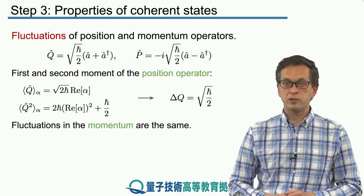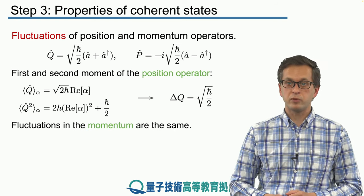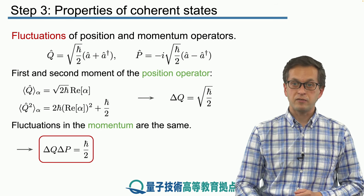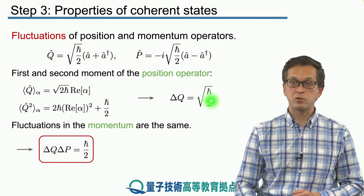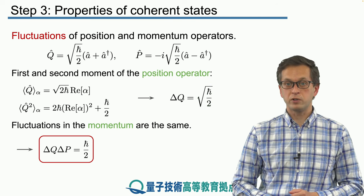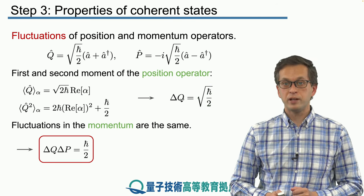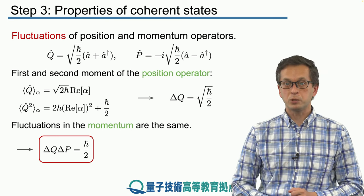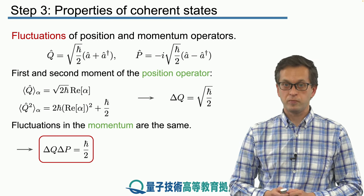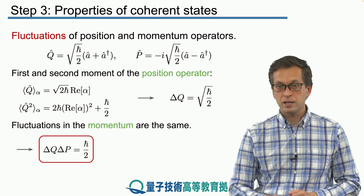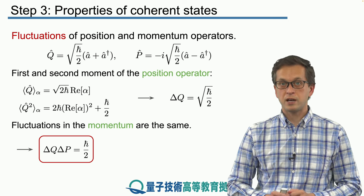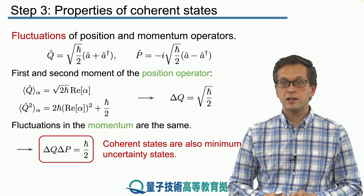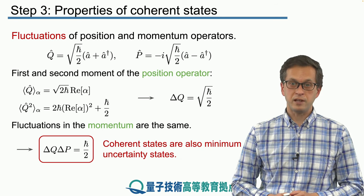Similarly, computing the fluctuation for the momentum operator P follows the same lines, and is also equal to square root of h-bar over 2. Multiplying them together, delta Q times delta P equals h-bar over 2. In other words, these fluctuations saturate the Heisenberg uncertainty relation, meaning that a coherent state is also a minimum uncertainty state.